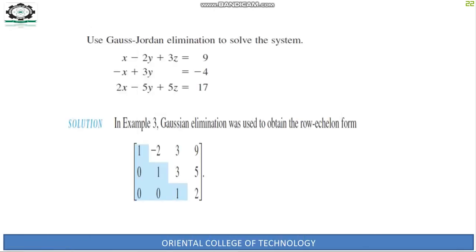Example 2: Apply Gauss-Jordan elimination to solve the equations: x - 2y + 3z = 9, -x + 3y = -4, and 2x - 5y + 5z = 7. Similarly, the equation can be written in the form Ax = B.